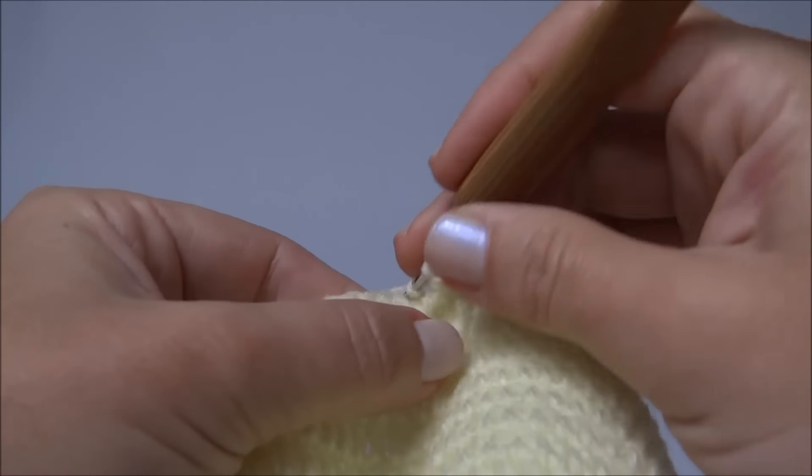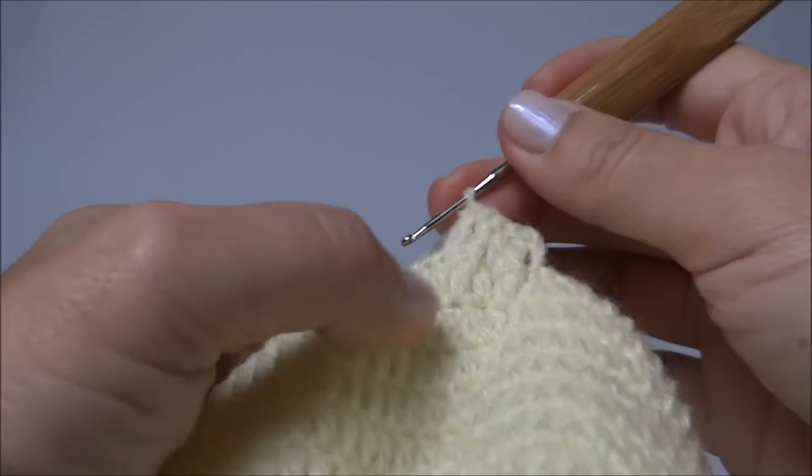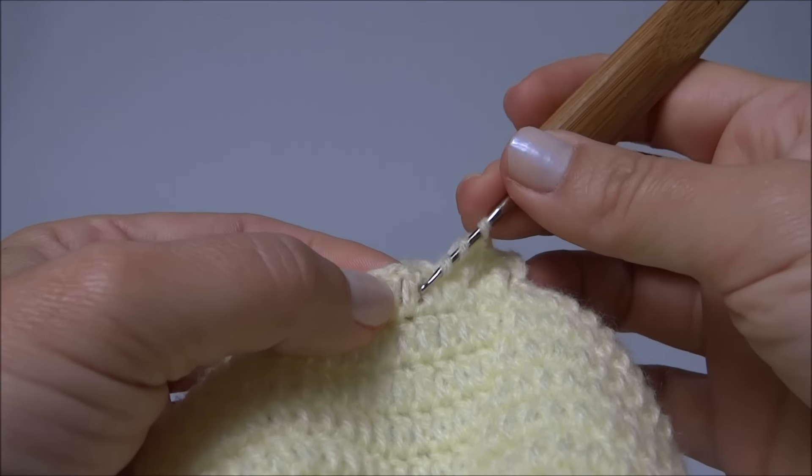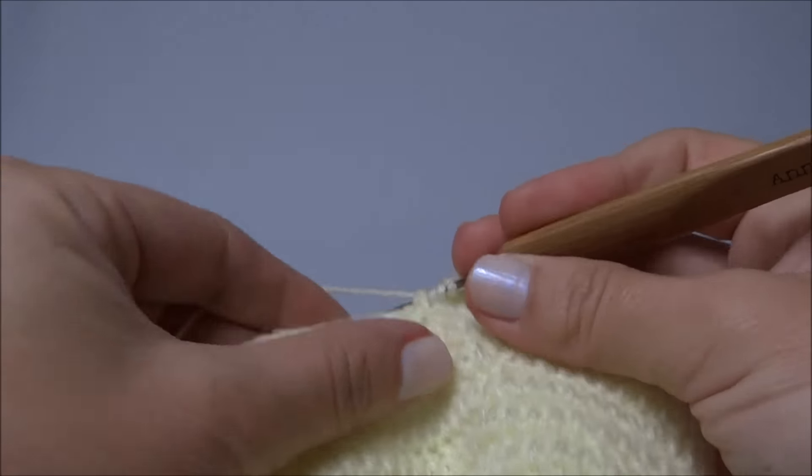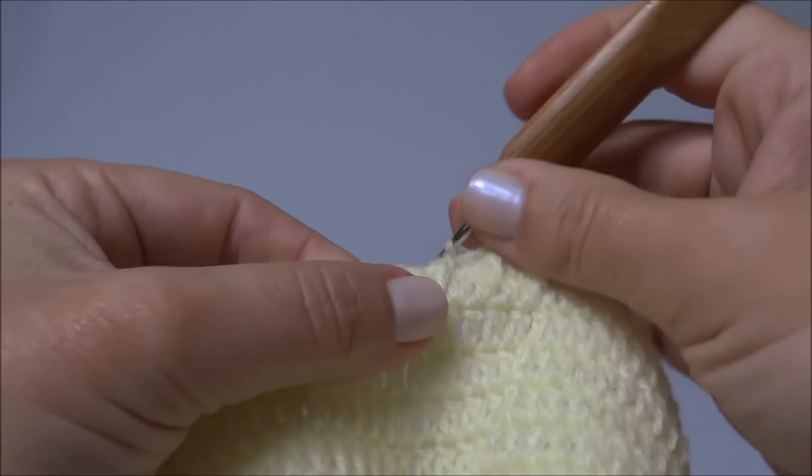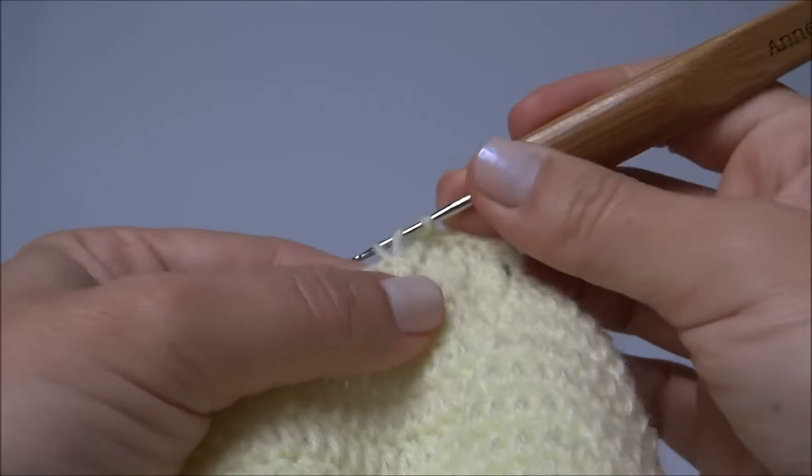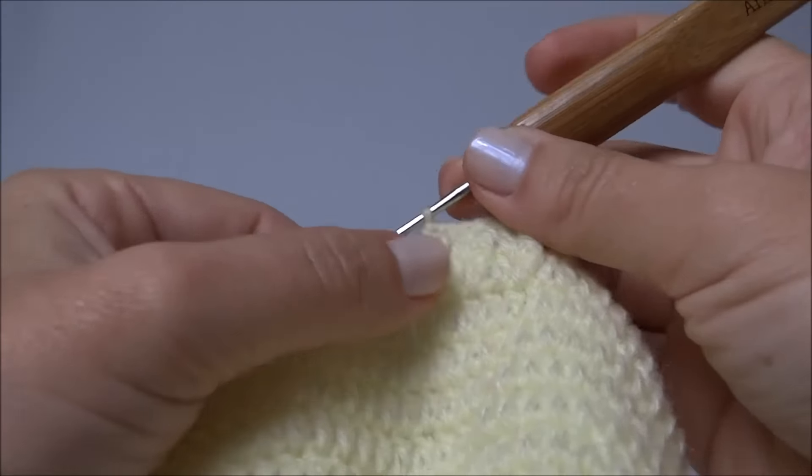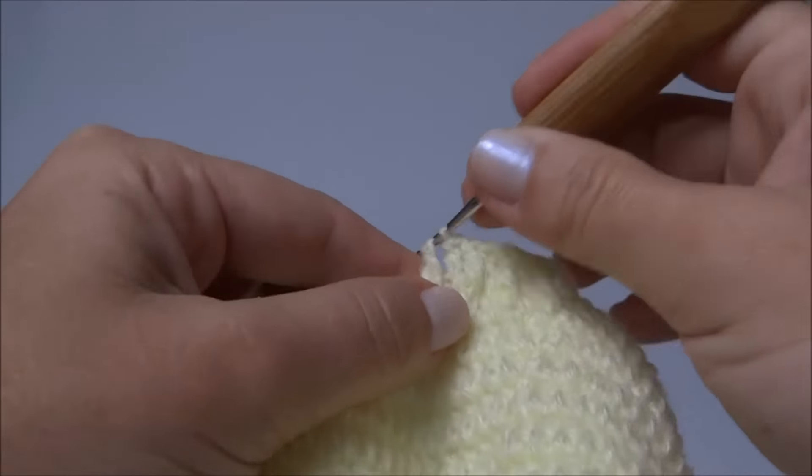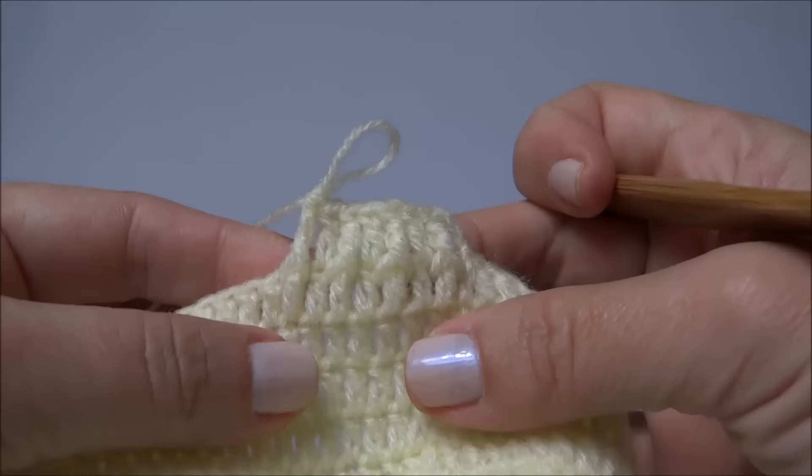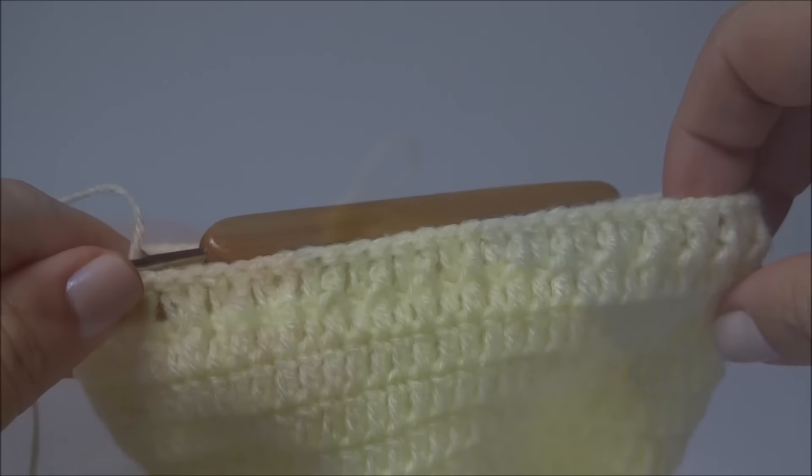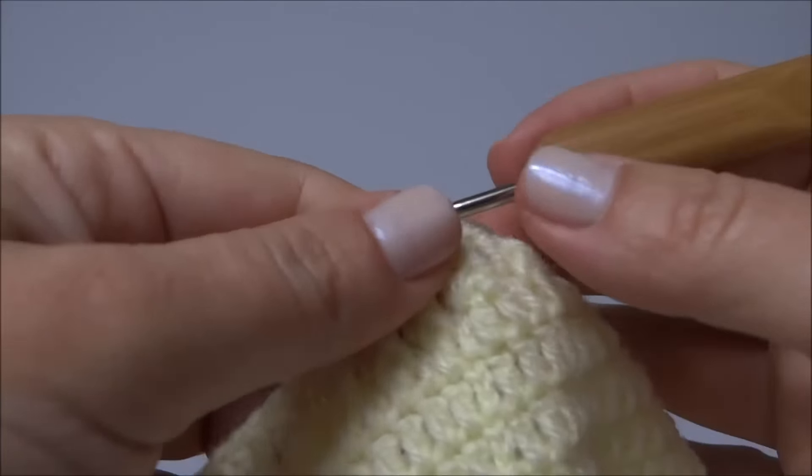Próximo ponto, um ponto alto. Próximo ponto, faço o ponto alto duplo em relevo. E dessa forma, vamos trabalhar por toda a carreira. Um ponto alto, um duplo em relevo. Um alto, um duplo em relevo. Onde vai se formando o desenho da barra. Finalizei a primeira carreira da barra.